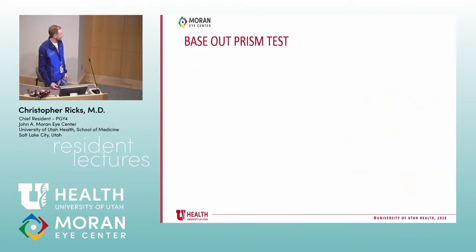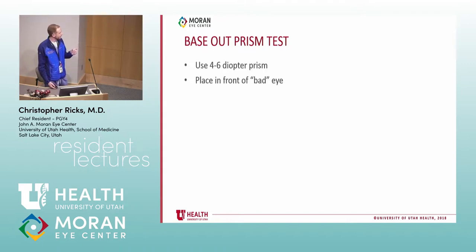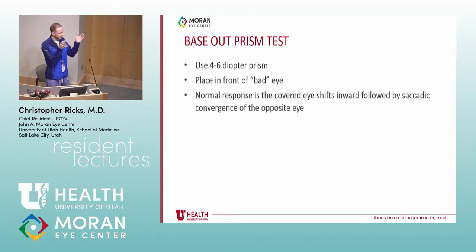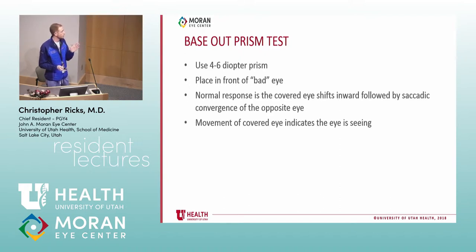Another test is the base-out prism test. Use a 4-diopter prism and place it in front of the bad eye with base-out. Make sure you know which eye is the problem eye. The normal response is that the normal eye will flick in, producing fusional convergence — you'll see the covered eye move. If there's any movement of that eye, they are seeing something out of it, because the brain wouldn't refixate through the prism if they weren't seeing anything.